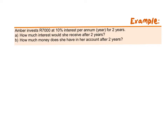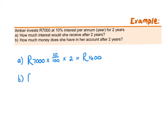Over two years, that'll be 700 multiplied by two, which is 1,400. You can think about this in your head because the numbers are quite small. But let's write this out. For part A, she would have invested 7,000 rand at 10% — so 10 over 100 — and she does so for two years. This gives us 1,400 rand. Which means that after the two year period, she would not only have 7,000 rand, but 7,000 rand plus the interest of 1,400 rand. So in total, after the two year period, she will have 8,400 rand.